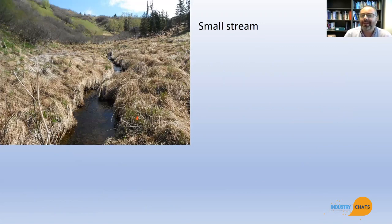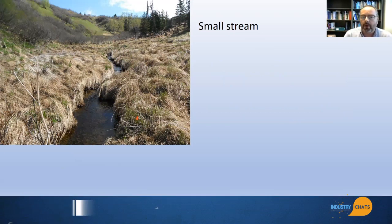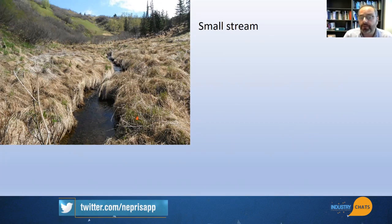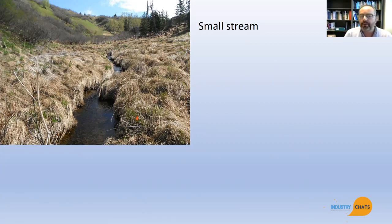Let's start by talking about what is a stream and what defines a stream. Flowing water is really the main characteristic that separates streams from other types of freshwater habitats. Here I'm showing you a small stream in Alaska — one of my research sites on the Kenai Peninsula. This is a headwater stream. It's steep, high gradient, and quite small. We could actually jump across this stream. This is probably the most common type of stream, but these often go unnoticed.